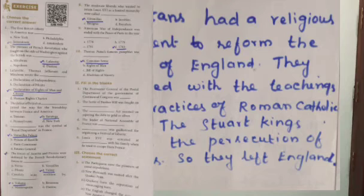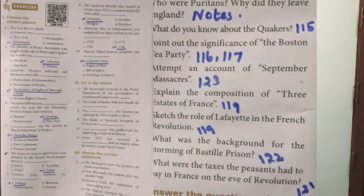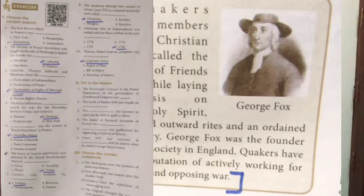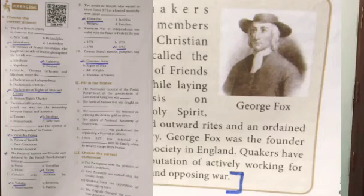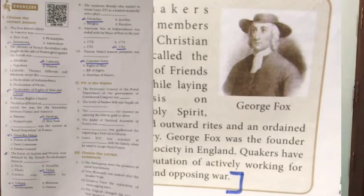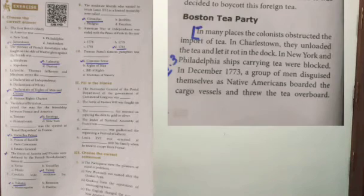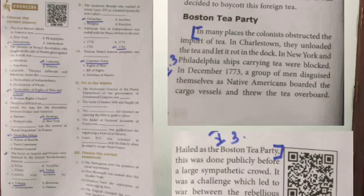Question 2 answer is on page 115. Question 3 is on page 116–117. Question 4 is on page 123, under 'The Revolutionary War' — from the beginning in August 1792, up to the incident called the September Massacre. Question 5 is on page 119, under the heading 'French Revolution Introduction,' from Louis XVI up to 'Businessmen and Wealthy Landowners.'